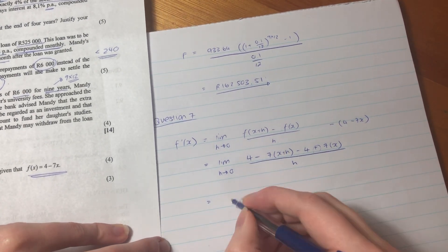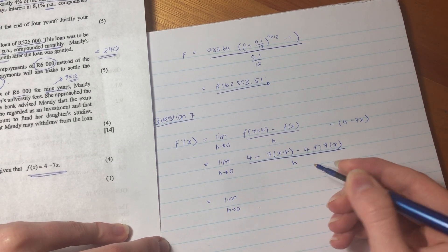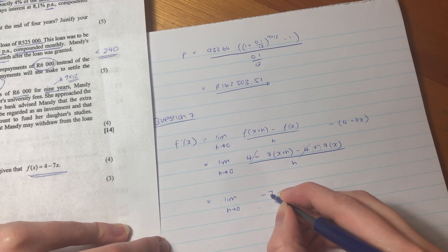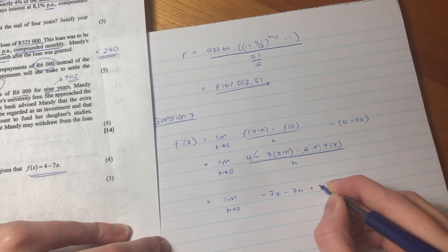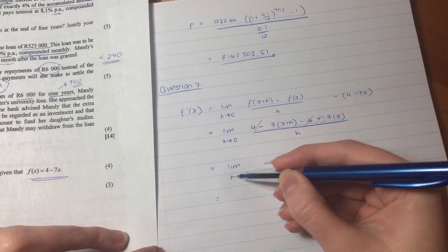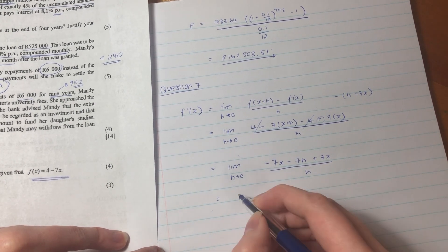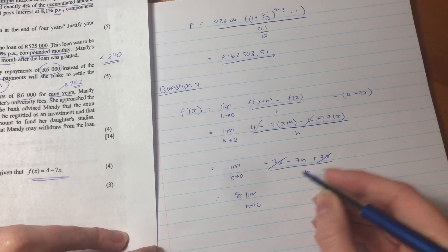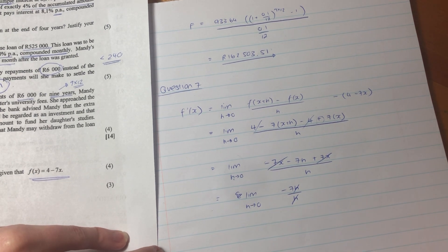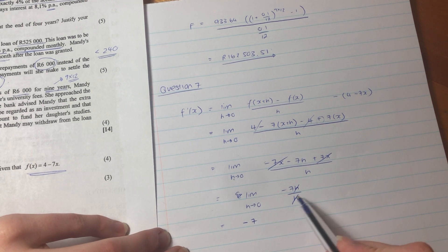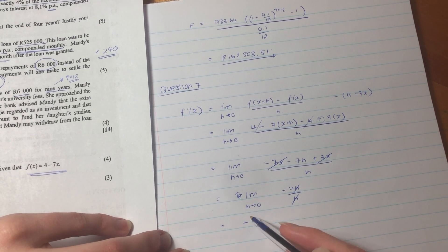It's very important, signs are very important, because if you don't put your signs correctly, you are going to get quite a strange answer. So 4 minus 4 gives me 0, then I'm going to have negative 7x, negative 7h plus 7x over h. We don't ever drop this until we've subbed in h equaling to 0. Then I have 7h over h, those h's cancel, so my answer is just negative 7.